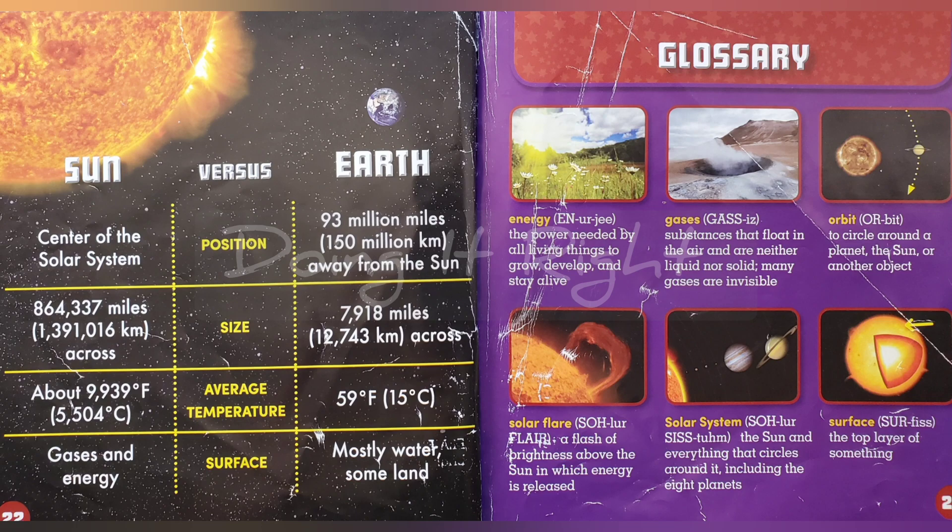Solar system: the Sun and everything that circles around it, including the eight planets. Surface: the top layer of something.